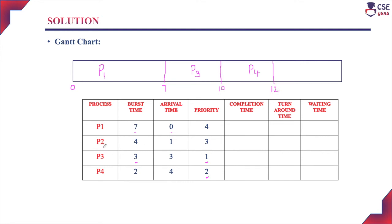Next, only one process remains in the ready queue — process P2. So we select P2 and assign it to the CPU for execution. The burst time for P2 is 4 milliseconds, so 12 plus 4 equals 16 milliseconds. Looking at the Gantt chart: 0 is the starting time for P1 and 7 is its completion time. Process P1 completion time is 7 milliseconds. Process P2 starts at 12 milliseconds and completes at 16 milliseconds. Process P3 completion time is 10 milliseconds, and process P4 completion time is 12 milliseconds.